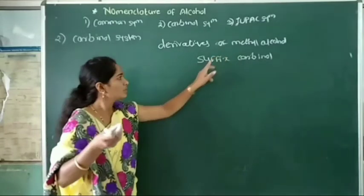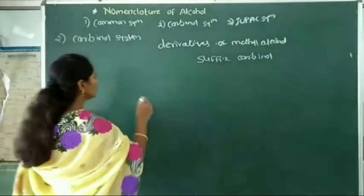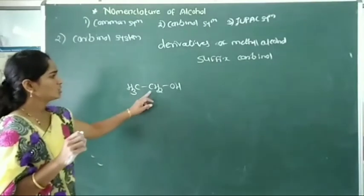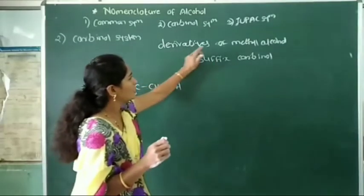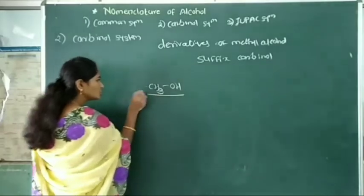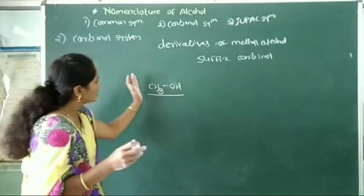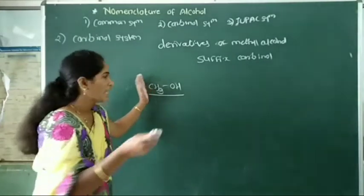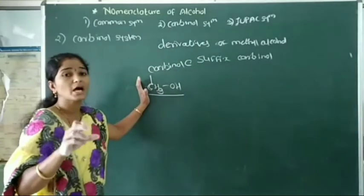In the carbynol system, the naming uses the suffix carbynol. The compound is considered as a derivative of methyl alcohol. In the carbynol system, the carbon of methyl alcohol is called as carbynol carbon. This carbon is called as carbynol carbon.